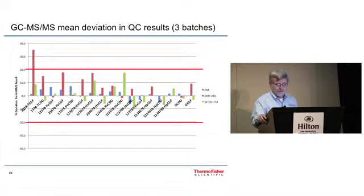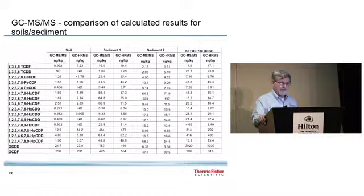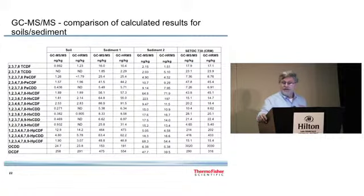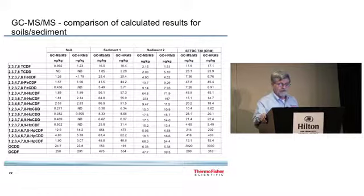Now, here are some reference samples that were analyzed by the triple quad, showing the results compared to what the actual values were. And you can see the tetra is a little bit higher on the CRM 490. And all the rest of them are less than 20% difference. And you notice that they tend to be a little bit more on the positive side with the triple quad. And you'll see that's pretty much the same when we look at some data on the high res. So here we're comparing three different samples along with one of the reference standards. And you can see the same as we just saw in the last presentation that the results are fairly similar. But that the GCMS tends to be a little bit higher.